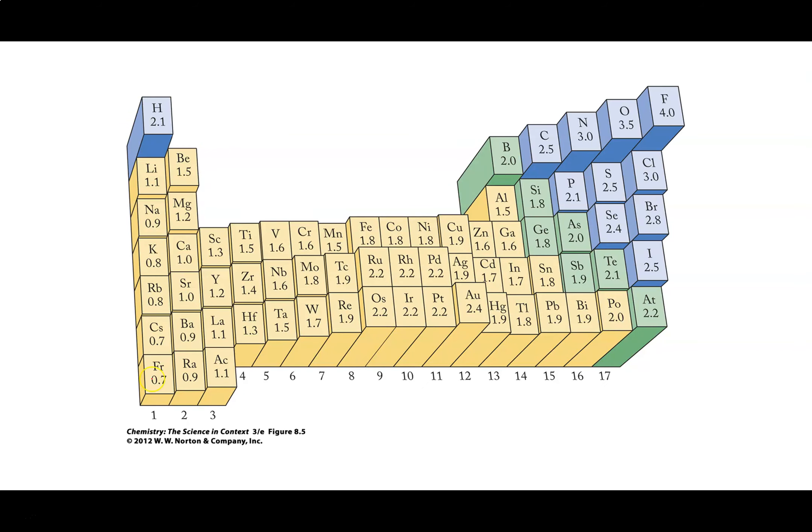So here are Pauling's electronegativity values and you can see that fluorine has the highest value with 4 and then down in the bottom corner here we've got francium with 0.7. So this is a pretty general trend.